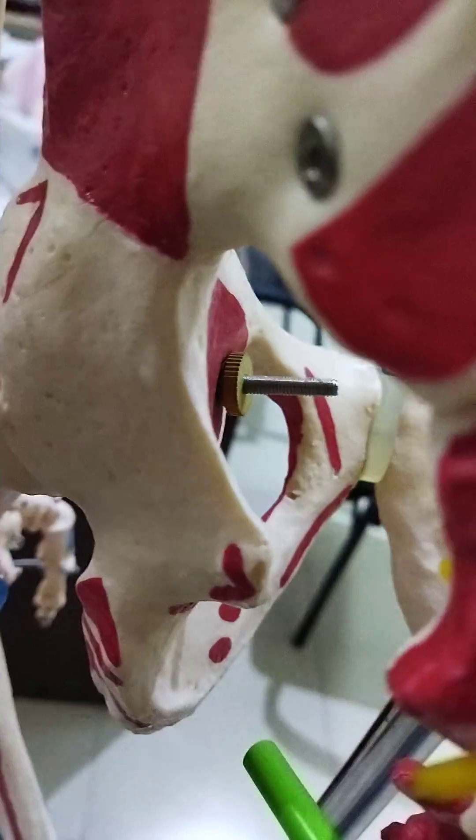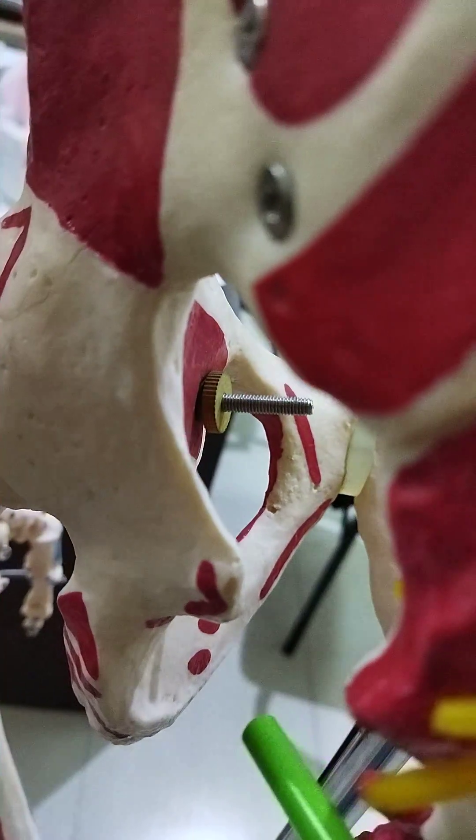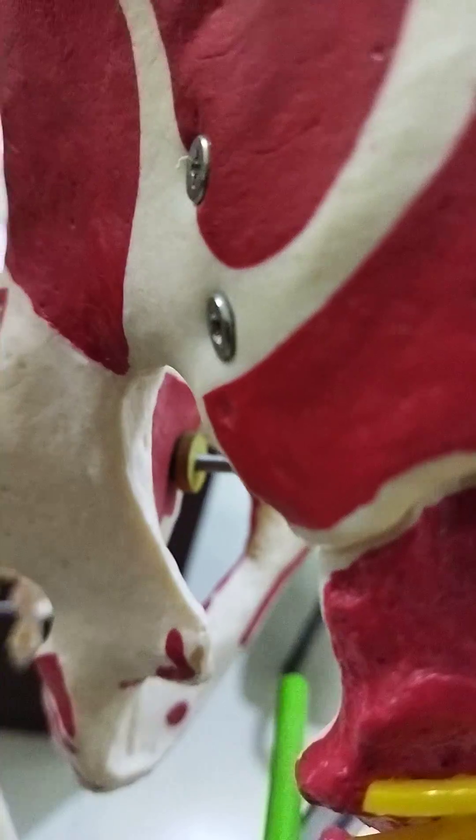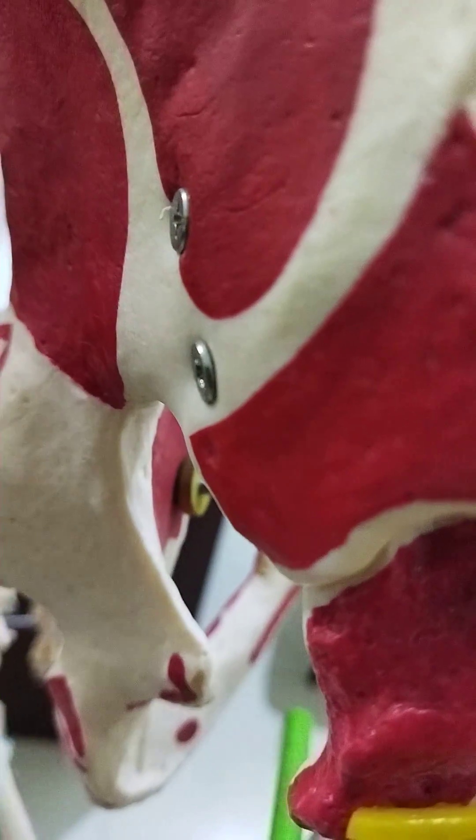At first it gives the inferior rectal branch. Then it enters the perineum and supplies the muscles of the perineum.